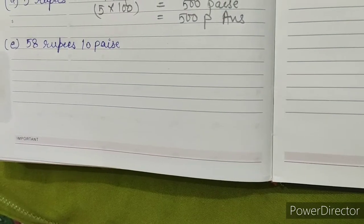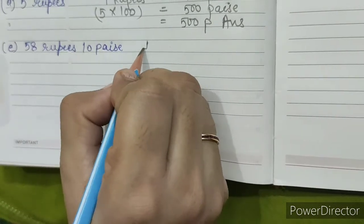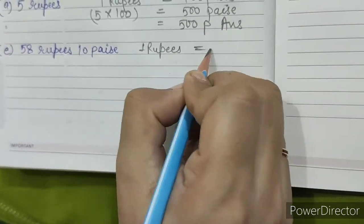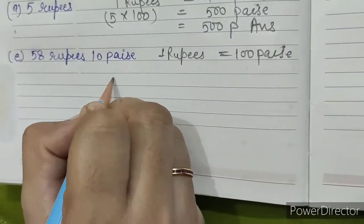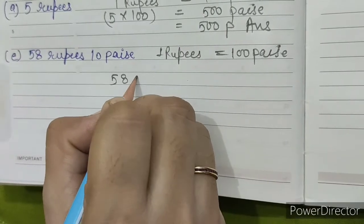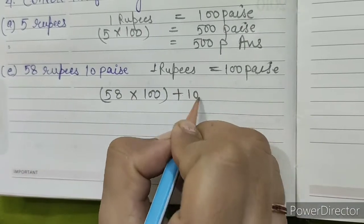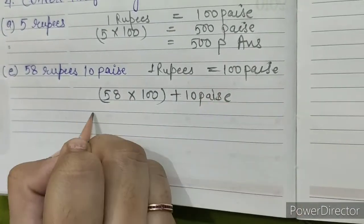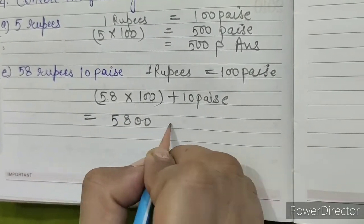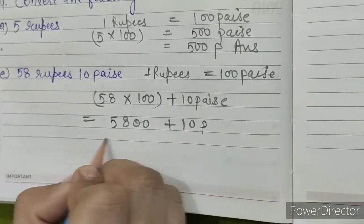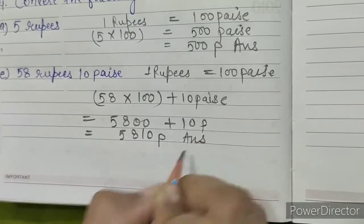E. 58 rupees, 10 paise. As we know, 1 rupee equals 100 paise. So 58 rupees × 100 plus 10 paise equals 5800 plus 10, which gives us 5810 paise. This is our answer.